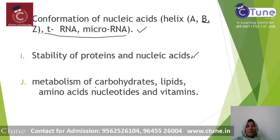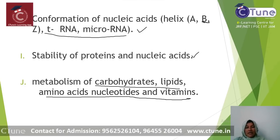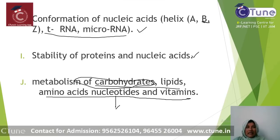The next topic is Metabolism of Carbohydrates, Lipids, Amino Acids, Nucleotides and Vitamins. Carbohydrate metabolism includes Glycolysis, Gluconeogenesis, Glycogenesis, and the HMP shunt — carbohydrate metabolism is more important compared to the others. Amino acid metabolism is also covered. Nucleotide metabolism is important too; for example, questions on Purines — Adenine being a purine nucleotide and a nitrogen donor — are commonly asked in nucleotide metabolism questions.